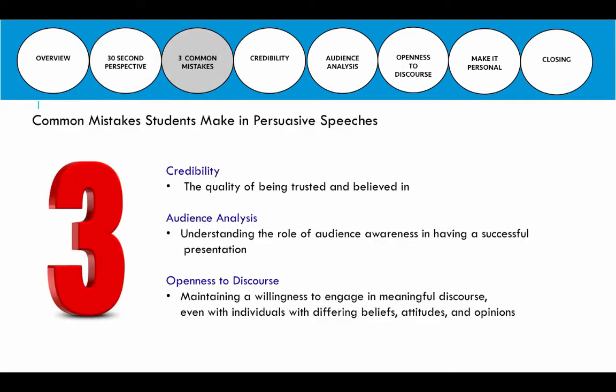The three common mistakes I see students make: the first is credibility — the quality of being trusted and believed. The second is audience analysis — understanding the importance of knowing who is in that audience, who you're presenting to, and who you're attempting to persuade. If you don't have a clear understanding of your audience, you may miss the mark completely because different types of audiences can be persuaded in different ways. And the last is openness to discourse — I often see a lack of willingness to engage in meaningful conversation with people who have different beliefs, values, and opinions, and we need to maintain an openness to discourse.